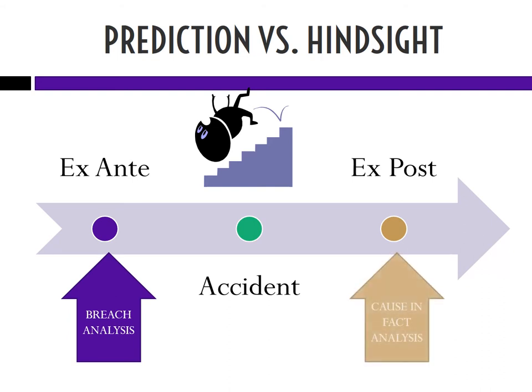An ex-post perspective is what we use in cause in fact — we can see what caused it. If there wouldn't have been a banana peel there, he wouldn't have tripped. But maybe his shoes were untied and he never touched the banana peel; it's actually his untied shoelaces that caused him to fall. Unlike breach analysis, with cause in fact analysis we're looking ex-post from after the accident happened.